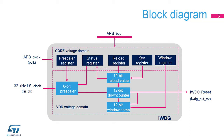Two clocks are needed. The APB clock is required in order to access registers. The LSI clock is required for the functional part of the watchdog. This architecture allows the Independent Watchdog to work even in stop and standby modes. A programmable 8-bit pre-scaler is used to divide the LSI oscillator frequency. The 12-bit downcounter defines the timeout value.